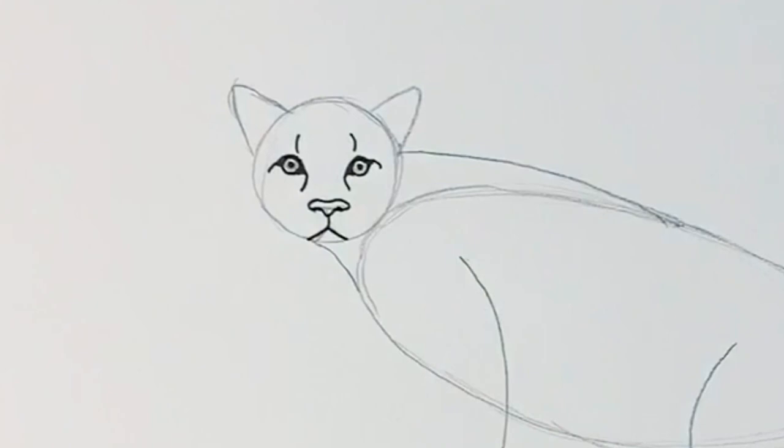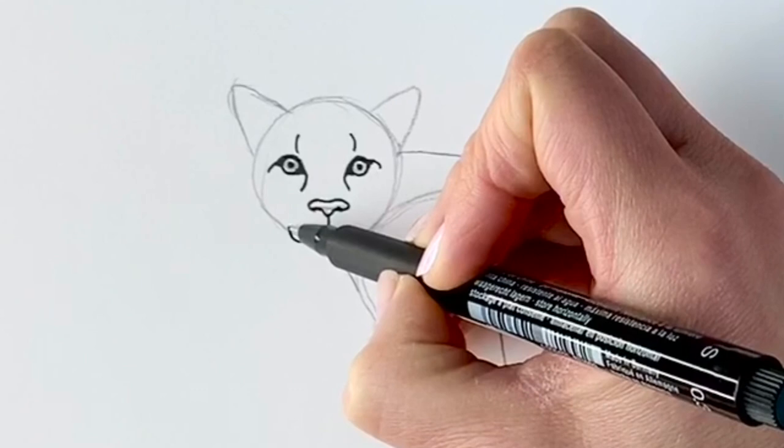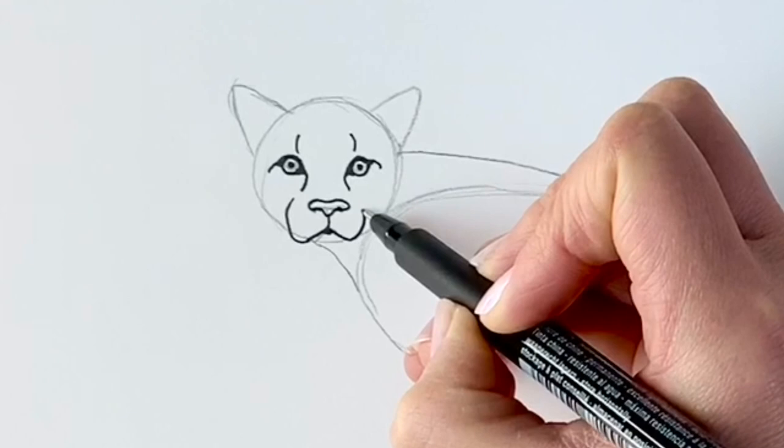Now I'm going to bring the bottom of this mouth here. It's going to go round and upwards like that, and then the same on this side. Round and upwards, and then the bottom of the mouth, just round like that.